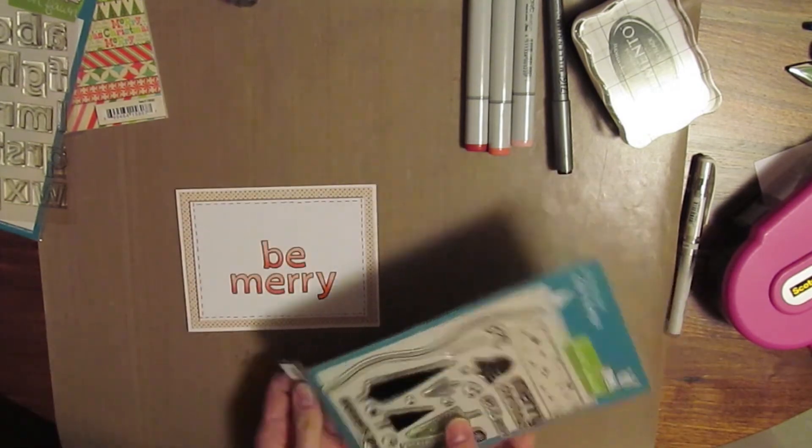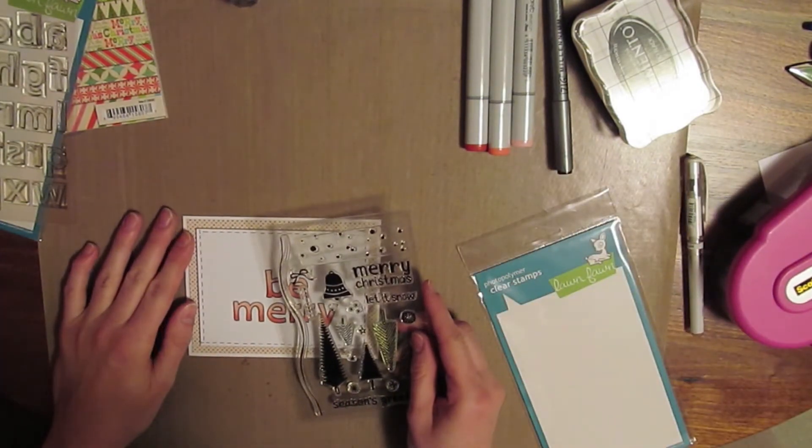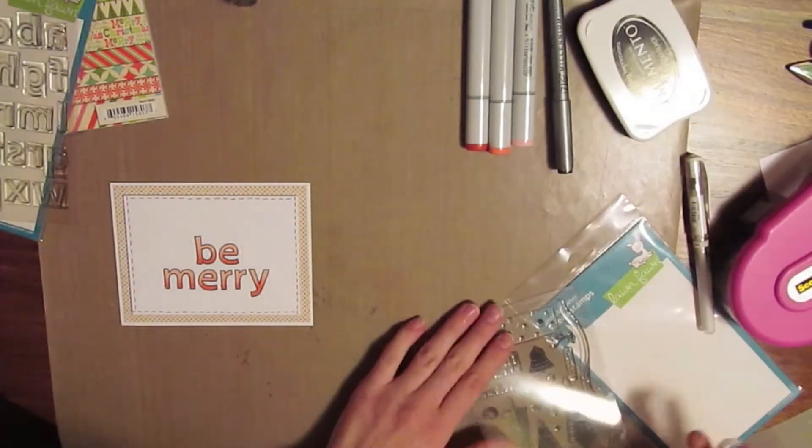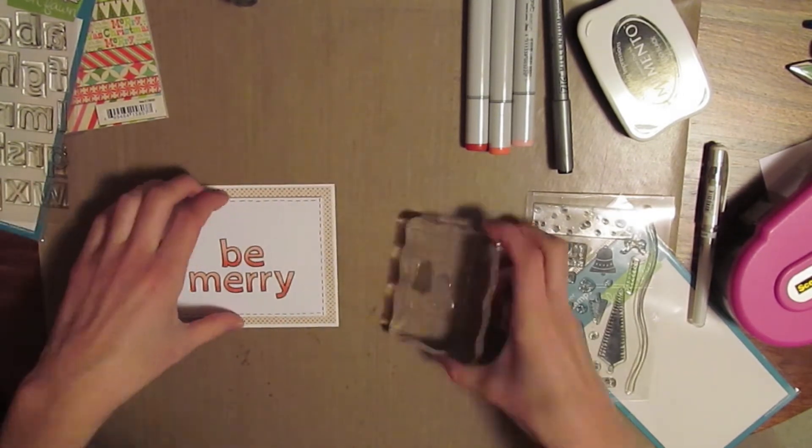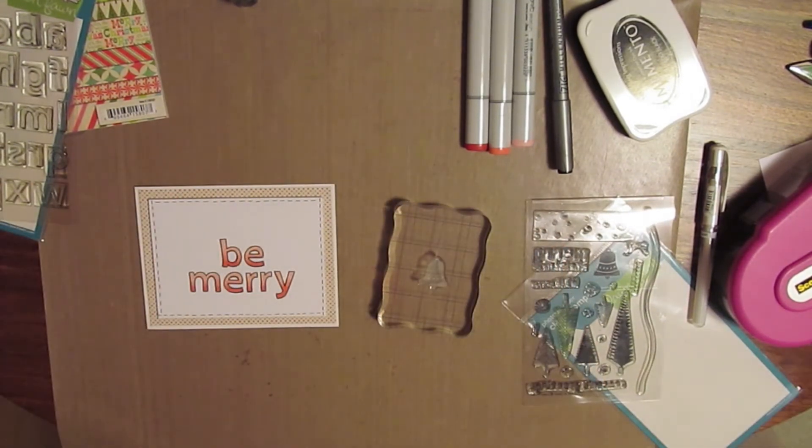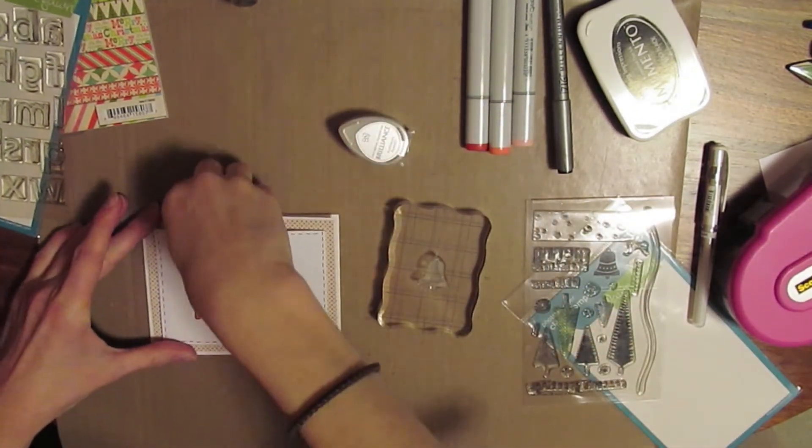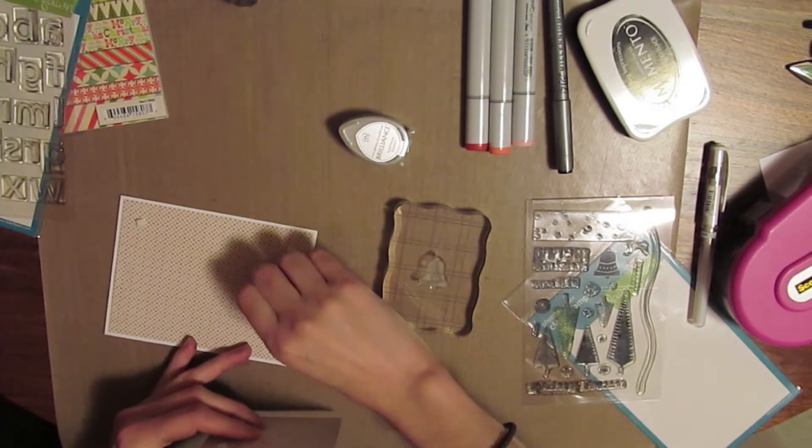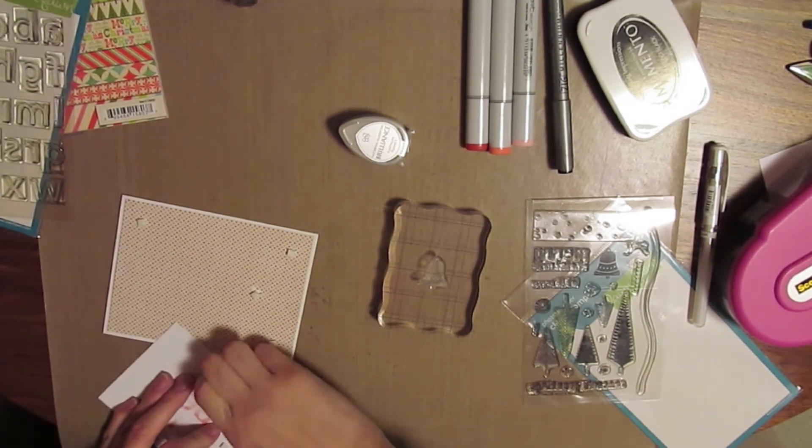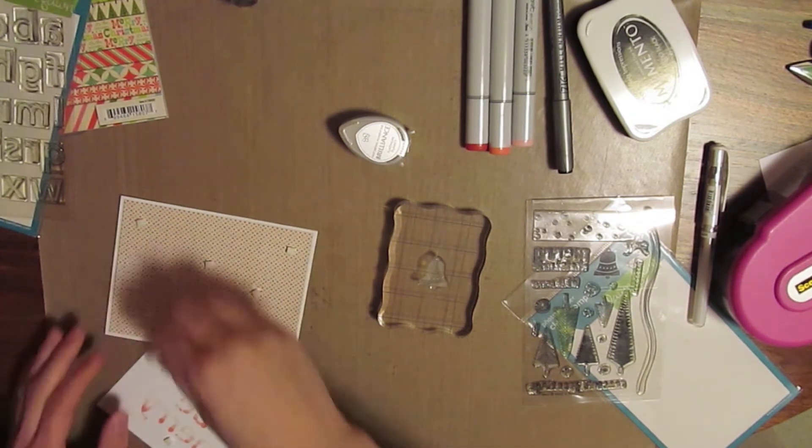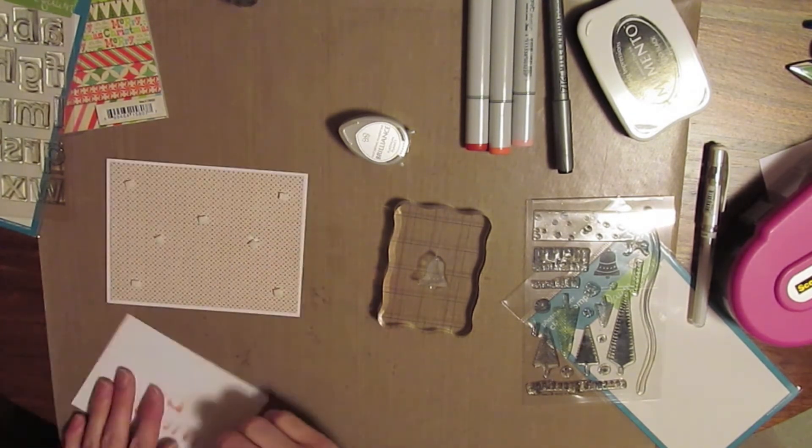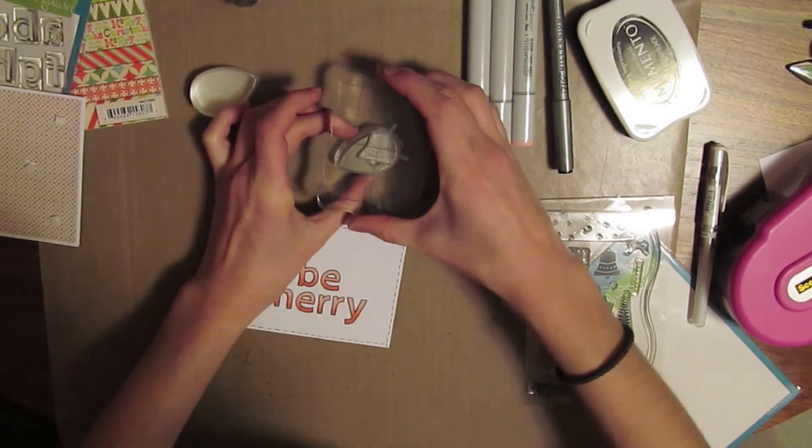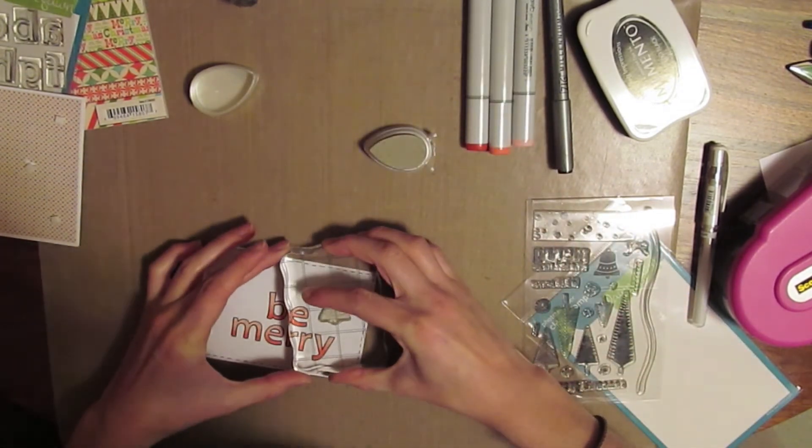And I decided to get the Let It Snow set from Lawn Fawn and stamp the bells onto there, which I should have decided to do before I adhered it down. So I just went ahead and took the pop dots off so that I could stamp it. And then I decided to take the Platinum Brilliance ink and stamp the bells on there.